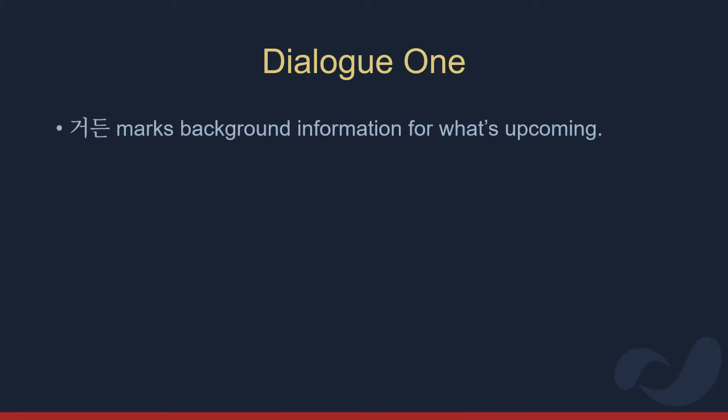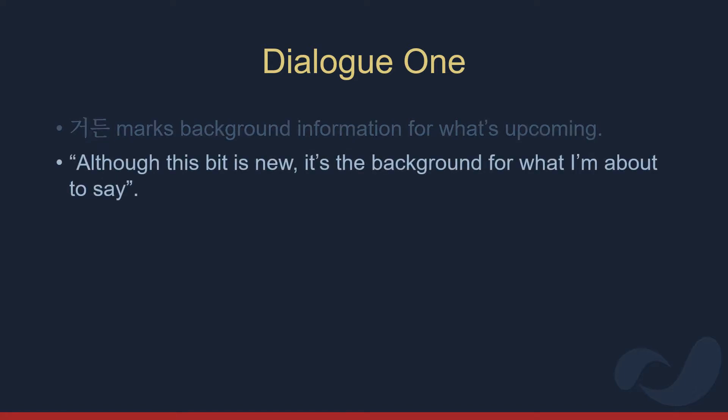So, why was 거든 used in this dialogue? Here, 거든 marks background information needed for an upcoming explanation. Yongi wants to talk about what happened the day before yesterday, but it's first necessary for the listener to understand that this day was her brother's training day. The story wouldn't be funny otherwise. Here, 거든 is like saying, although this bit is new to you, you need it as background for what I'm about to say.